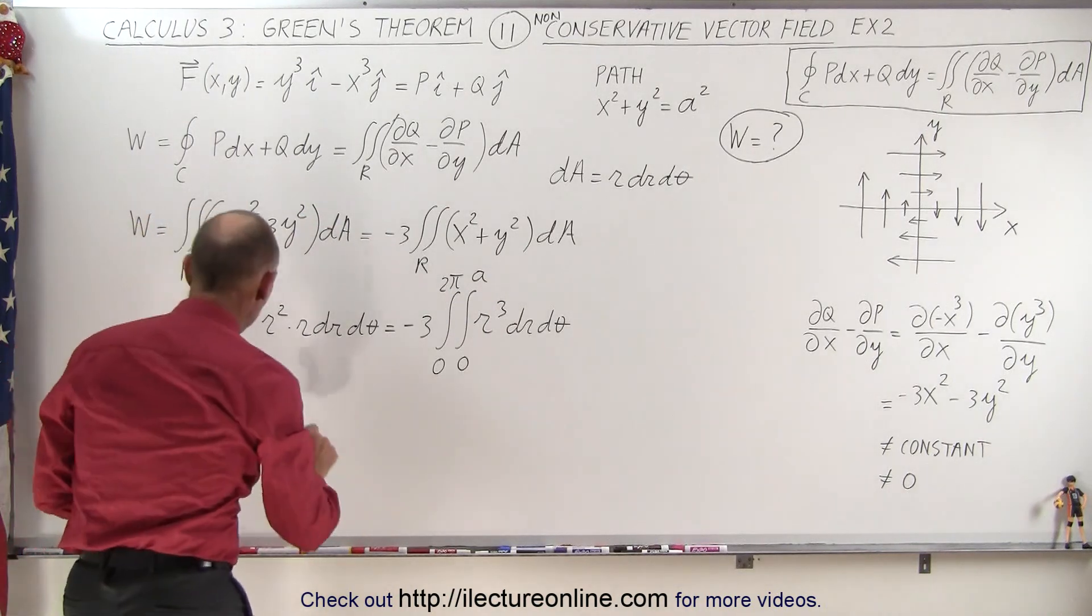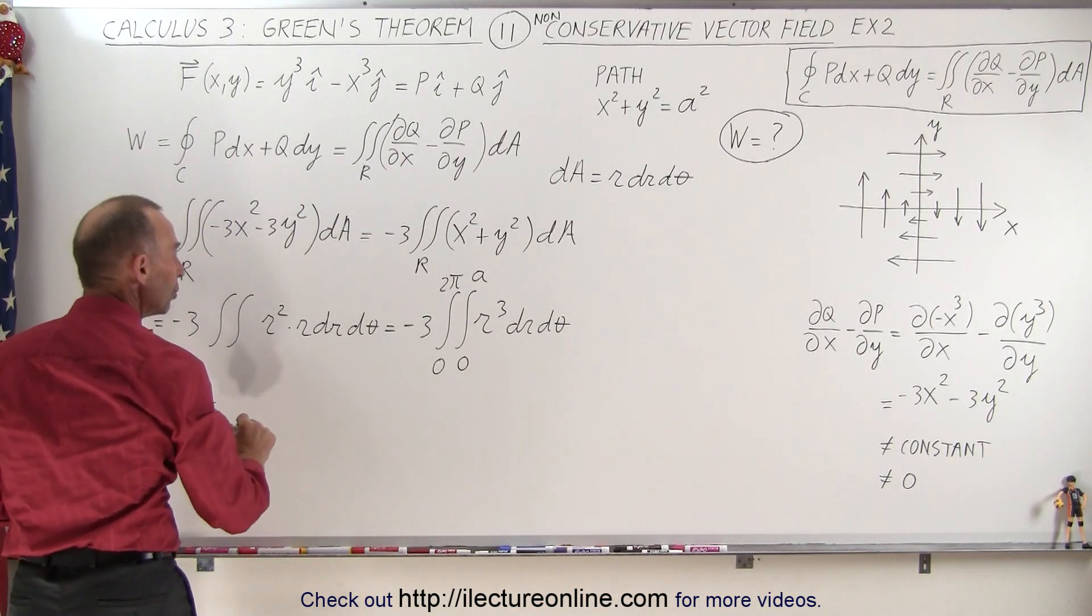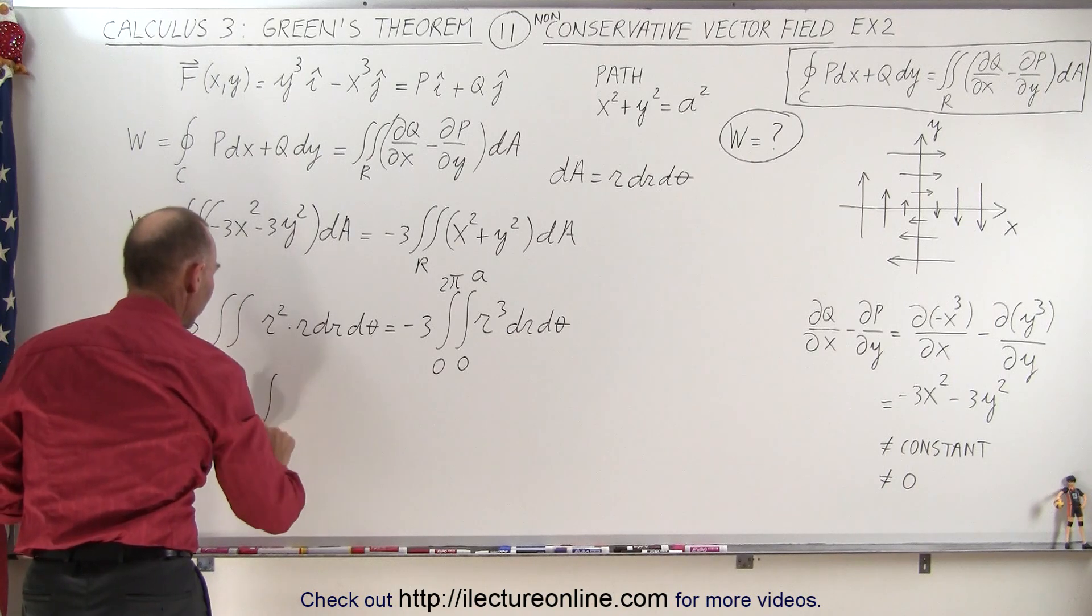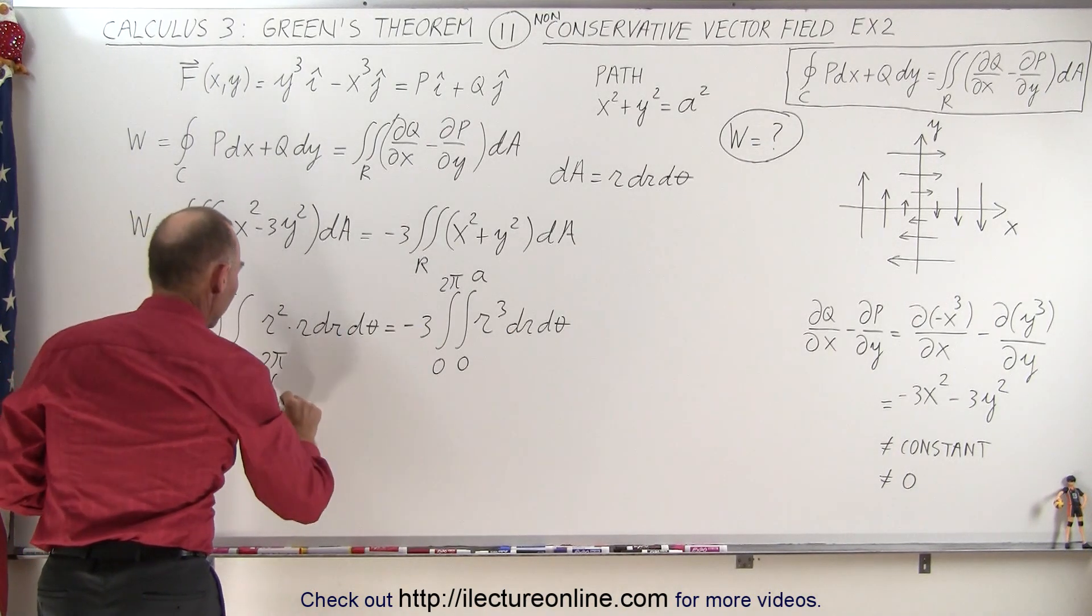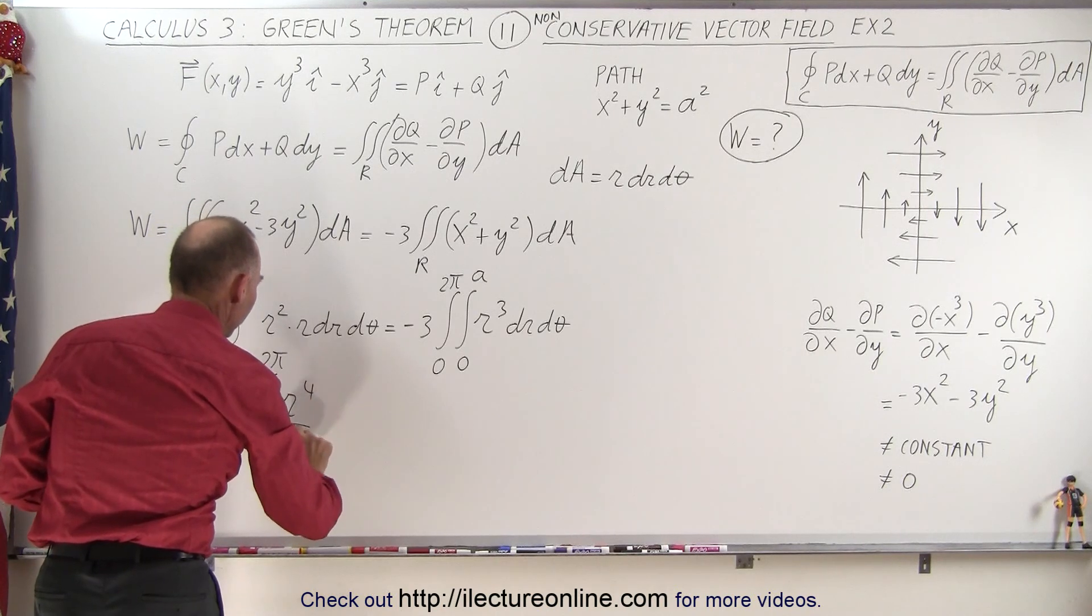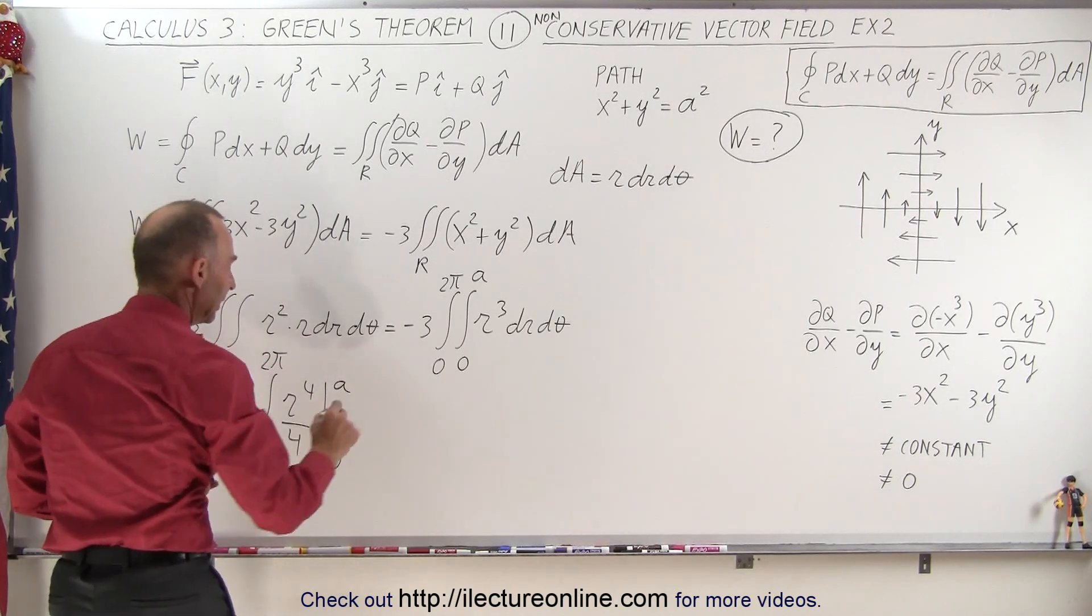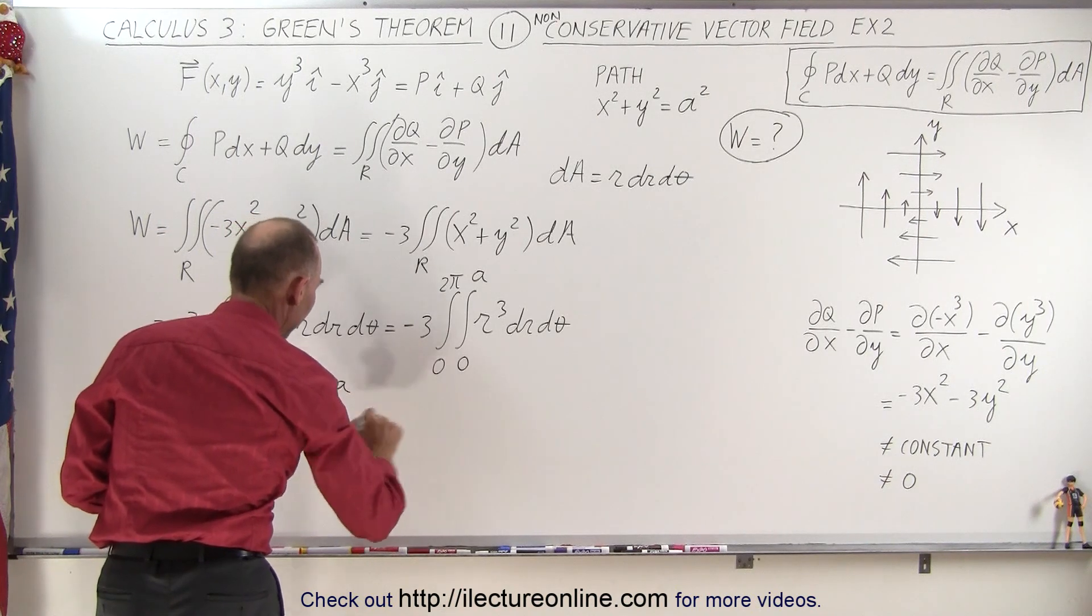When we integrate r, we get the following. So this would be equal to minus 3 times, we still have the integral over the angle, and r becomes r to the 4th over 4, evaluated from 0 to a, and then we still have a d theta left.